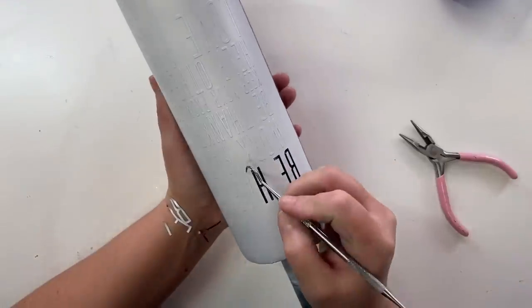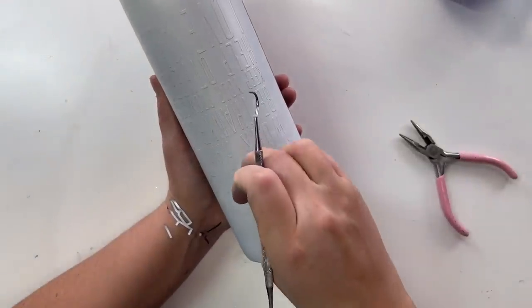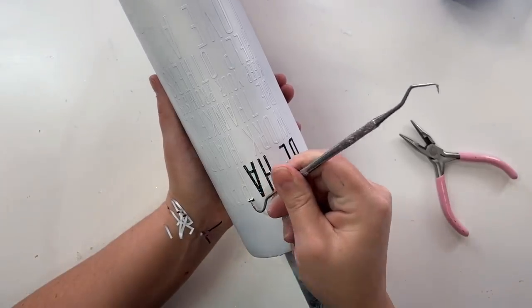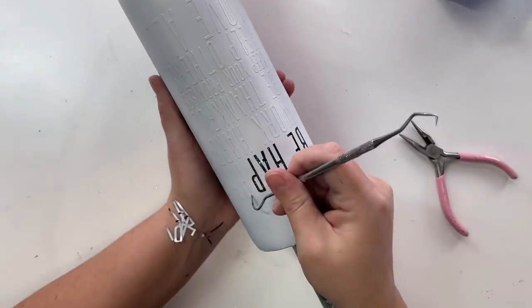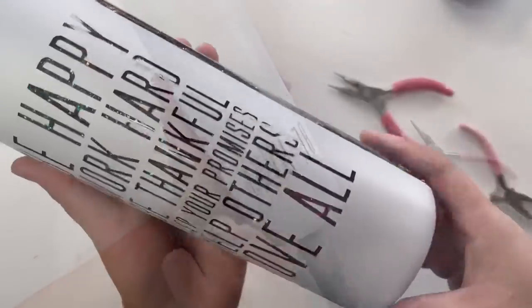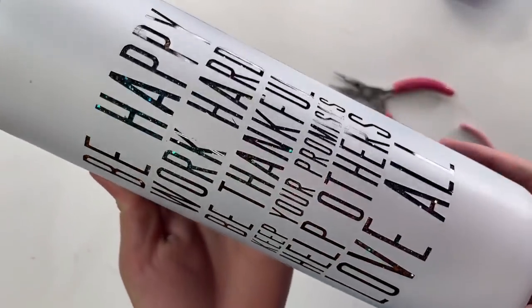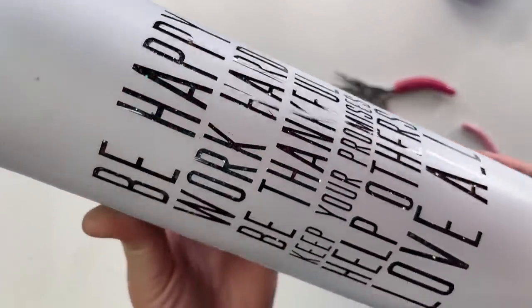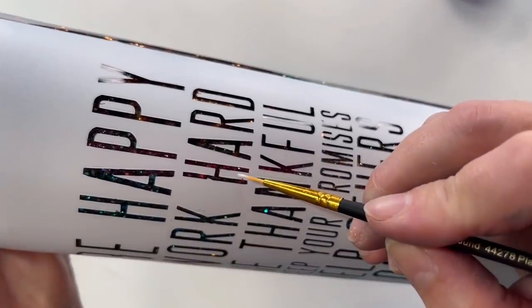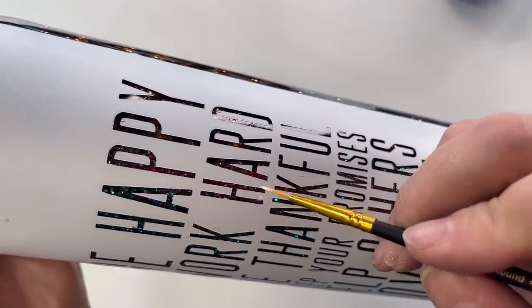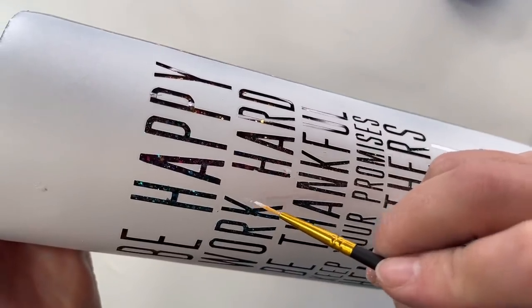And then if you happen to scratch your paint during this process or mess up a little bit, no big deal. Just spray a little bit of white spray paint into a medicine cup. Use a fine point paintbrush and just fix any little boo-boos that way. And then once I got all my little letters done, I was ready to move on to my distressing process.